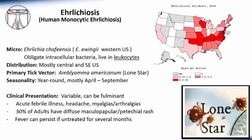The next disease is ehrlichiosis, or human monocytic ehrlichiosis. The etiologic agent is Ehrlichia chaffeensis, or Ehrlichia ewingii in the western United States. It is also an obligate intracellular bacterium, however it lives in leukocytes. The distribution is mostly in the central and southeastern United States, closely mimicking the distribution of Rocky Mountain Spotted Fever. The primary tick vector is Amblyomma americanum, or the lone star tick.